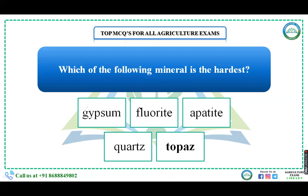Which of the following minerals is the hardest — gypsum, chlorite, apatite, quartz, or topaz? Among these, topaz is the hardest. Quartz is harder than feldspar, but topaz is harder than quartz as well. So the right answer is topaz.